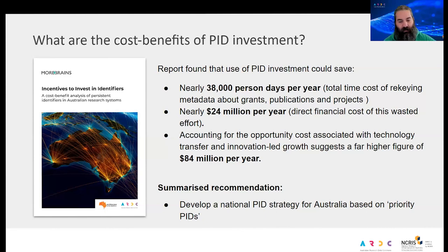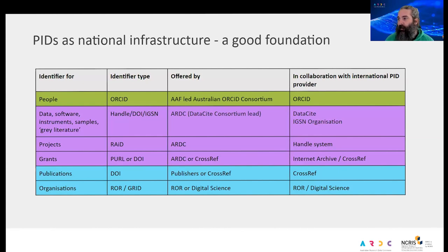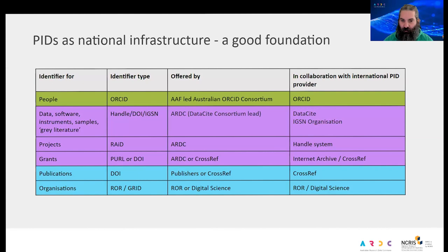The cost-benefit analysis recommended that we develop a national strategy and roadmap for the application of persistent identifiers in Australia's research and innovation sector. We already have a number of PIDs in use and organizations offering them as services. For example, there is an ORCID consortium led by the Australian Access Federation. The ARDC itself offers DOIs, Handles, and RAiDs to the Australian research sector. There is also the ROR, which is an international organization — ROR IDs can be freely used by any research organization at no charge.